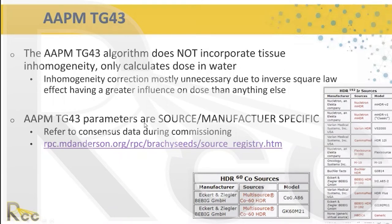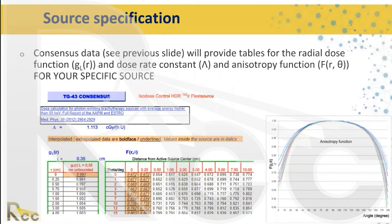All TG-43 parameters are source and manufacturer specific, generated either by the manufacturer or through consensus. Each manufacturer, when developing a new source, collaborates with multiple academic institutions to measure and model results, combining data from all institutions to establish consensus source parameters — which is what you see in the TG-43 report. If there are any questions, we are encouraged to contact the manufacturer directly.